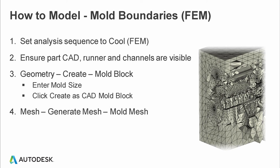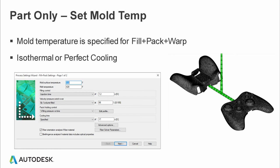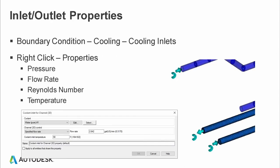The cooling analysis inputs: there are two ways to do cooling analysis. One is isothermal perfect cooling around the part — this is very ideal for predicting warpage. The other involves assigning inlet and outlet properties, which we call boundary conditions. These can be assigned as pressure, flow rate, Reynolds number, or temperature.